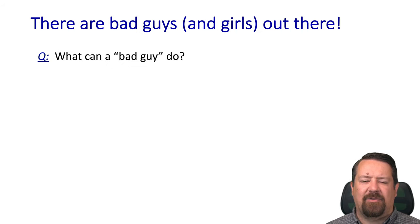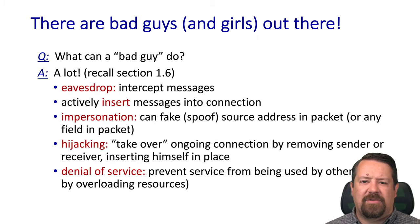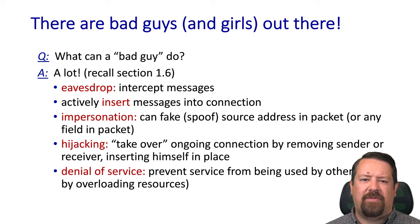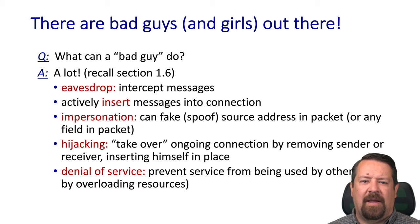We keep mentioning attackers, but we haven't really said what our threat model is — what is it that the bad guy can do? The answer is quite a bit. The simplest is probably eavesdropping: just intercepting the messages and reading them. A more advanced capability would be to insert messages into the connection. Beyond that, perhaps impersonation — faking source addresses so that messages appear to come from someone they didn't. We also might think of hijacking: not just intercepting but actually taking over one end of a connection and replacing the sender or receiver. And lastly, denial of service — not necessarily a DDoS attack specifically, but any action that prevents the connection from being able to continue and achieve its desired service goals.